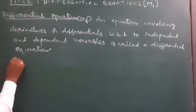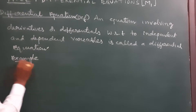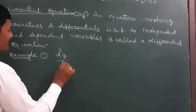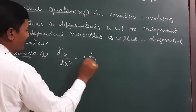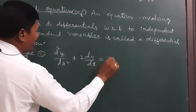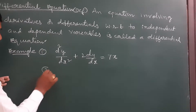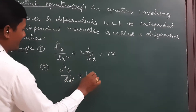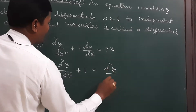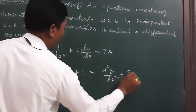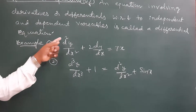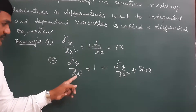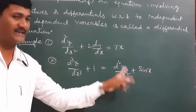For example, Example 1: d²y/dx² + 2 dy/dx = 7x. Example 2: d³y/dx³ + 1 = d²y/dx² + sin(x). These are examples of differential equations.